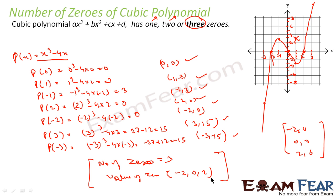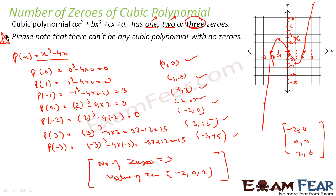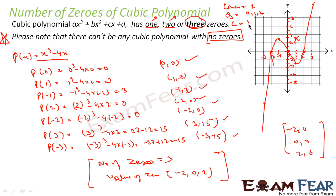Thus we have shown that a cubic polynomial function can have 1, 2, or 3 zeros — at the maximum, 3 zeros. One crucial point to note is that there cannot be any cubic polynomial function with no zeros; there has to be at least 1 zero. The linear polynomial function can have only 1 zero, quadratic can have 0, 1, or 2 zeros, and cubic will have 1, 2, or 3 zeros — it will never have zero zeros.